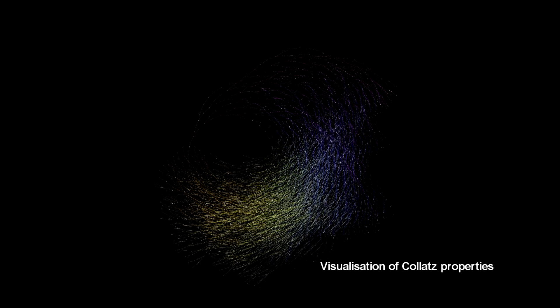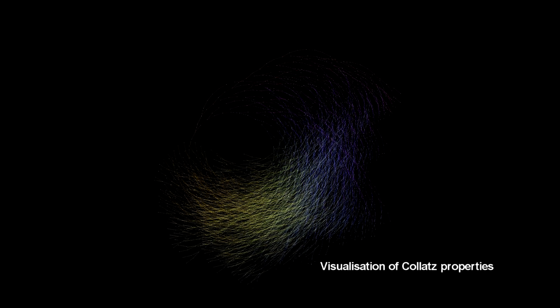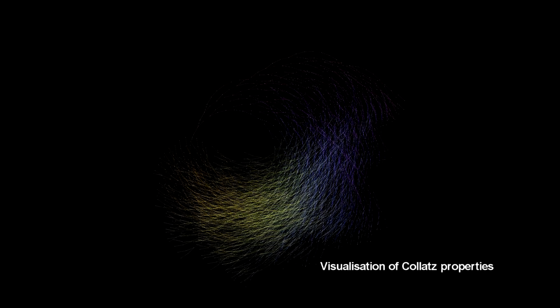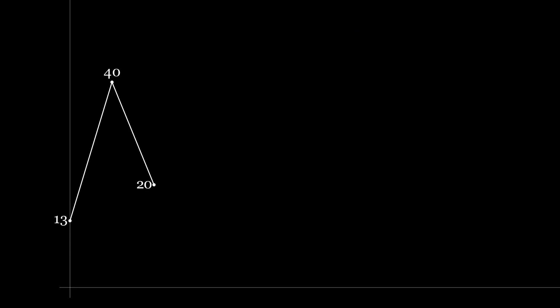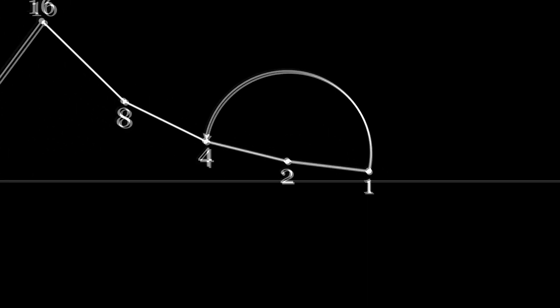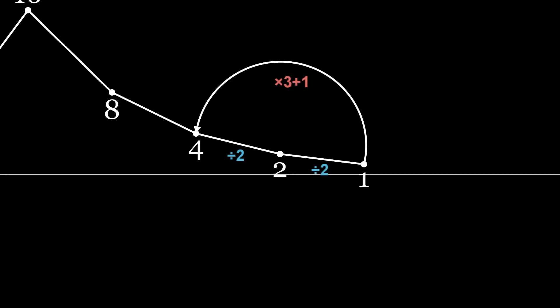The Collatz conjecture is fascinating. Start with any positive integer. If it's an odd number, you multiply it by 3 and add 1. If it's an even number, you divide it by 2. Continue this process of divide by 2 if even, and multiply by 3 add 1 if odd, at every step until you reach 1, where it continuously cycles in this 4-2-1 loop.